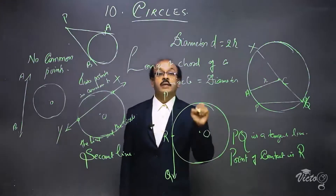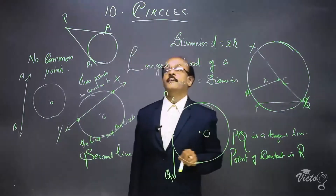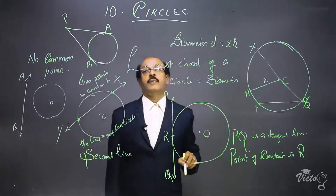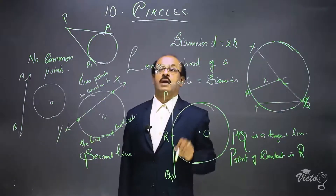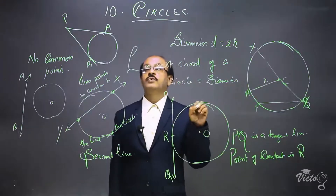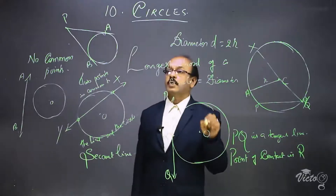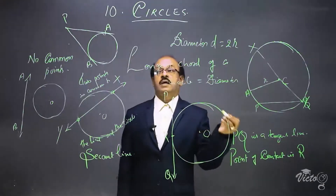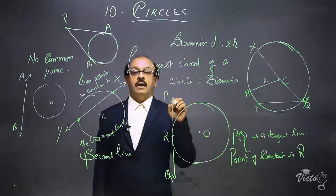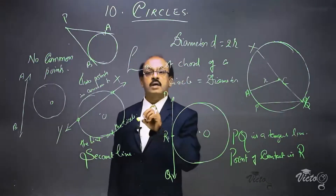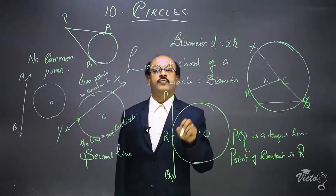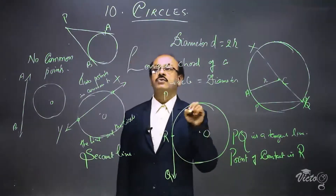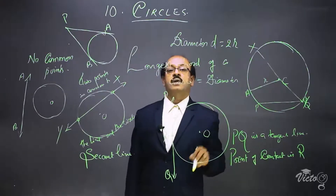There is an important theorem based on these two tangents: the lengths of tangents drawn from an external point to a circle are equal. That means length PA is equal to length PB. This is an important theorem and we have to prove it. We will prove that the two tangents drawn from an external point to a circle have equal length.